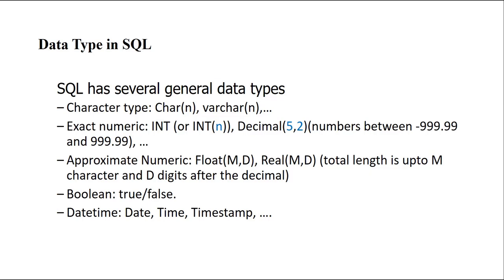CHAR(n) means the length of the data type is n. The difference between CHAR(n) and VARCHAR(n) is that in CHAR(n), n is fixed — if you define the column length as 10 and you provide data of length 5, the remaining 5 characters are automatically filled with spaces. SQL fills the remaining space with blank characters to fit the data to the specific number n provided.